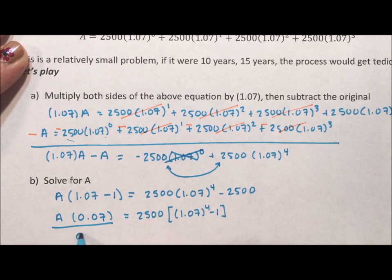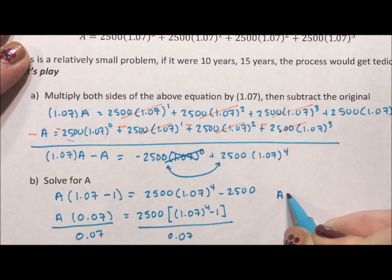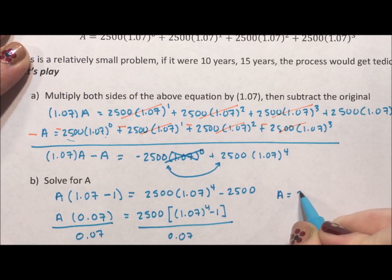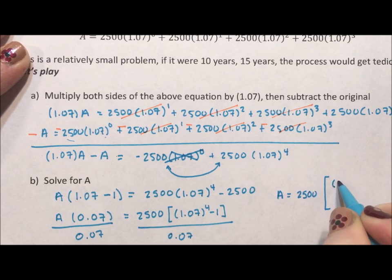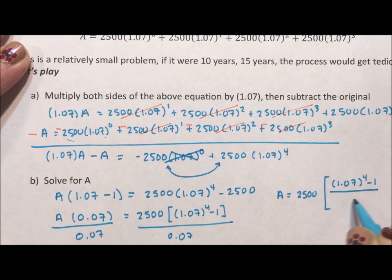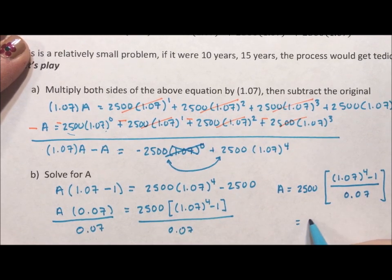Then I can divide by the 0.07. 1.07. And I end up with A, my final amount, equals 2,500 times in brackets 1.07 to the fourth minus 1 all divided by 0.07. And if you throw this into your calculator, you're going to get 11,099.86.